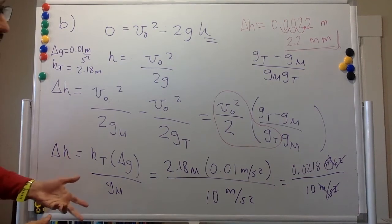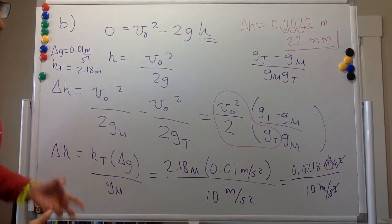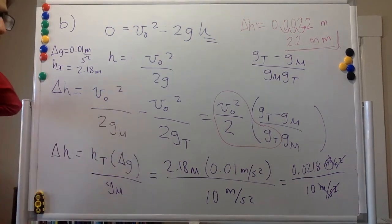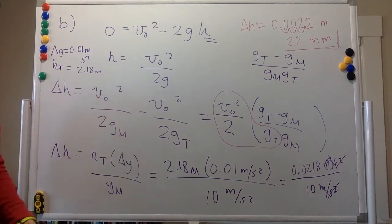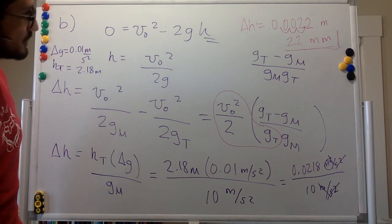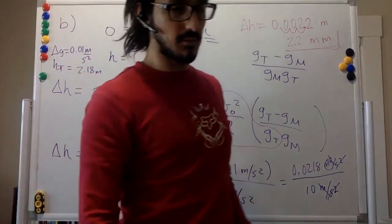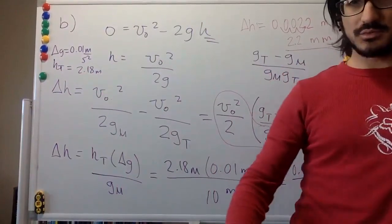Fosbury jumped with his back facing down while crossing the bar and landing on his back — no longer dangerous. This new way of jumping is better for the high jump than the previous technique, which is why he was able to win and set a new world record. All elite high jumpers use this technique now.